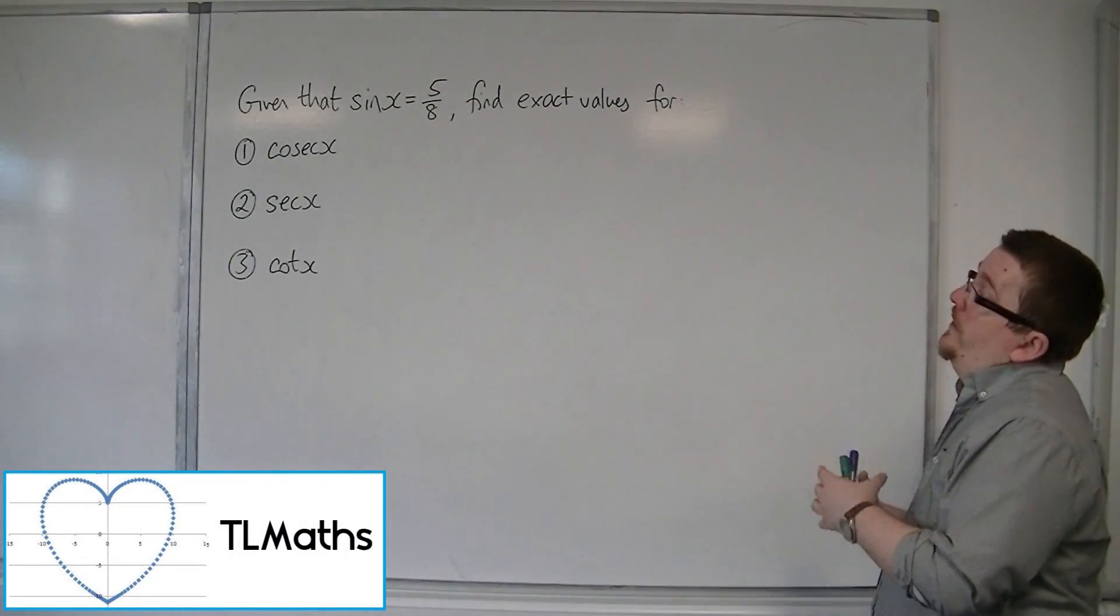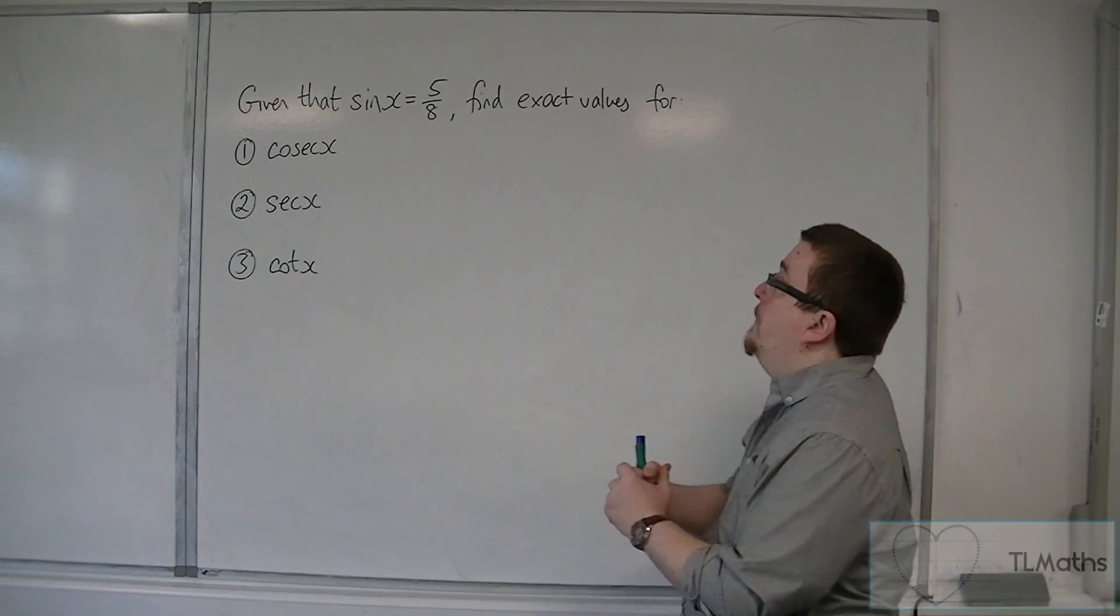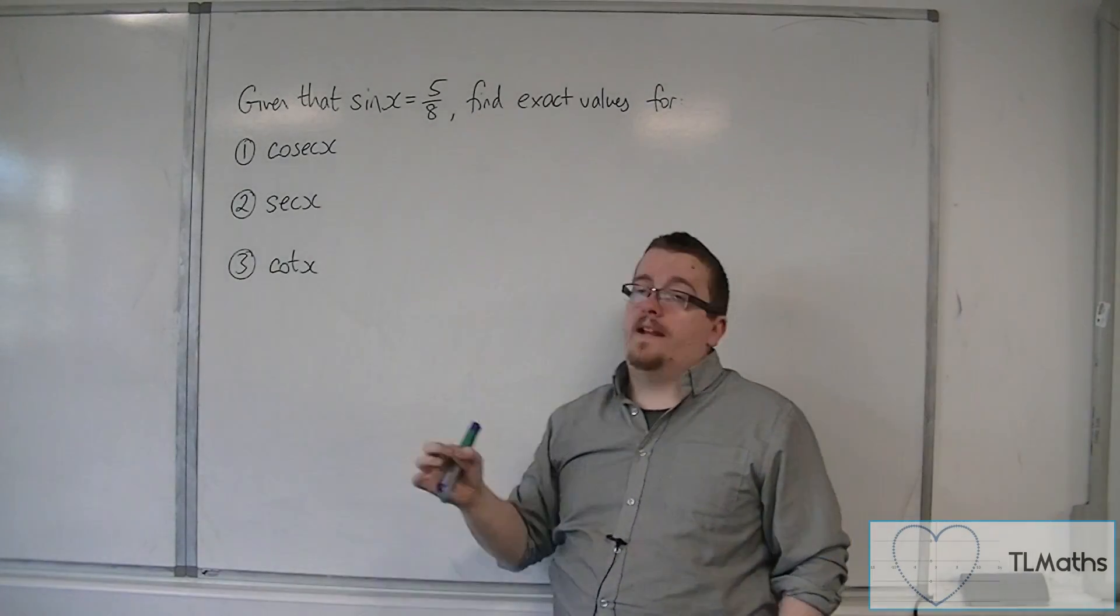So let's say that we're given that sine x is equal to 5 eighths, and we're asked to find the exact values for cosec, sec, and cot.